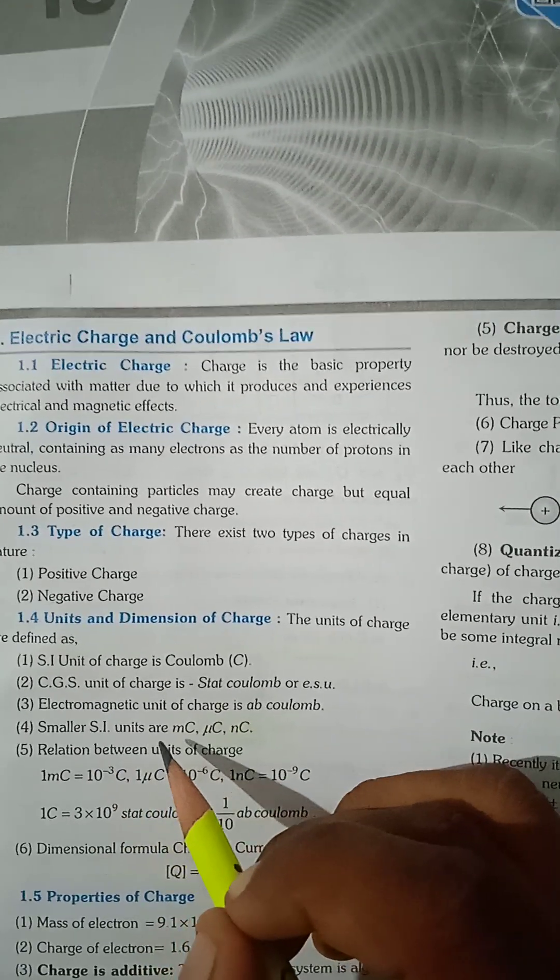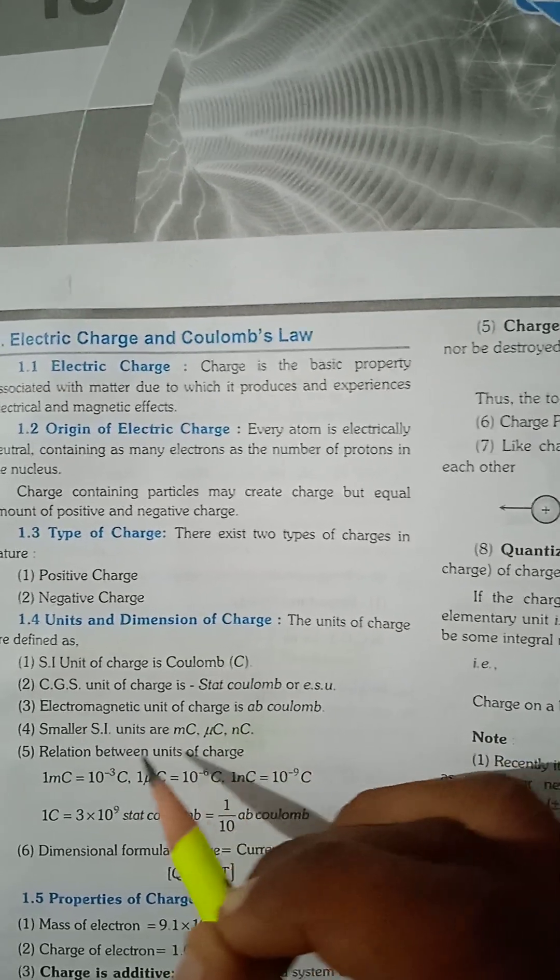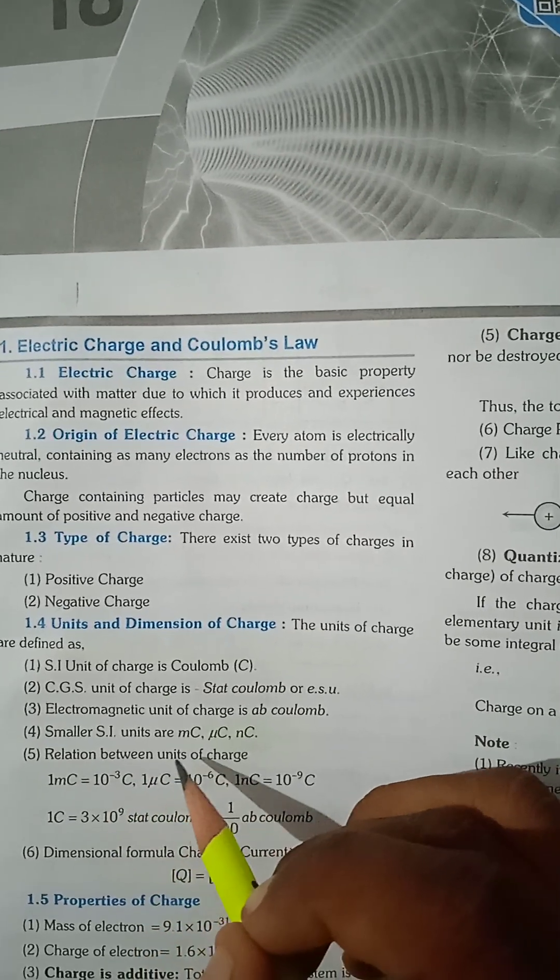Smaller SI units are: Micro Coulomb, Mega Coulomb, Micro Coulomb, and Nanocoulomb. Relation between units of charge: